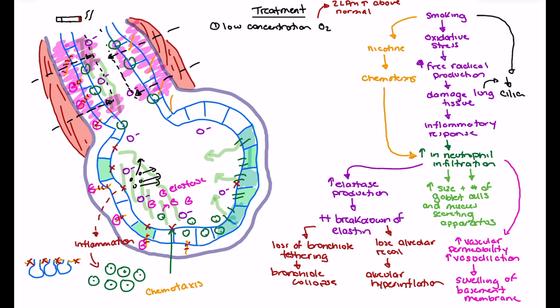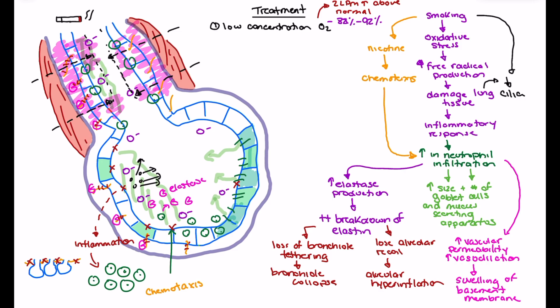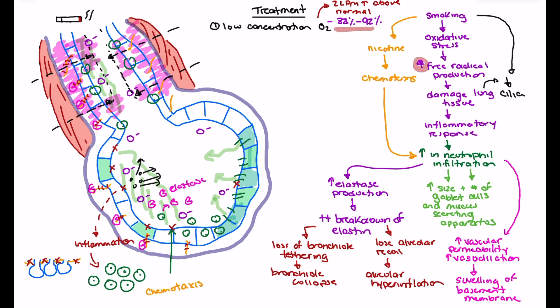If the patient is on home oxygen, say four liters per minute, we bump that up by two liters per minute. Our target is between 88 and 92 percent — the reason is that if we overshoot above 92 percent, the risk is increased free radical production, and we know one of the consequences of that is neutrophil infiltration. We want to target 88 to 92 percent because we do not want to increase free radical production. Supersaturation of this patient can actually make COPD worse.